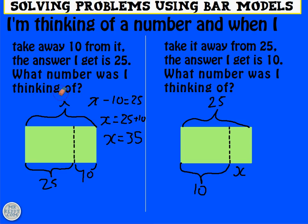Does that work? If I take out the x and put in 35? Yeah, 35 take away 10 does give me 25. So that is right. Over on the right hand side, 25 take away x is 10. And hopefully you can see from the bar model that if I just took away 10 from 25, I would get x. 25 take away 10 is x.